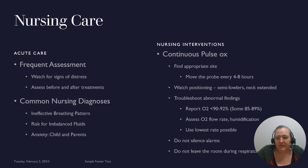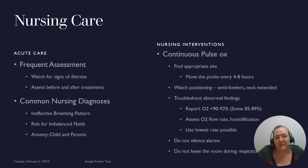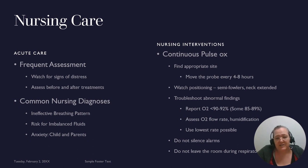Every child admitted with a respiratory problem will be on continuous pulse oximetry. Ensure the probe is positioned correctly, applied properly, and change the probe site every four to eight hours. Leaving a probe in one place too long can cause skin damage — degloving of a finger has been documented. Watch positioning: semi-Fowler's is best when the child is awake, with neck extended using a neck pillow to keep the chin from falling and blocking the airway.